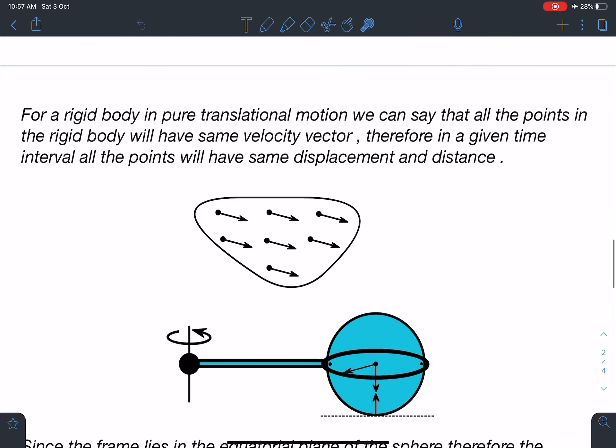For a rigid body in pure translation we can say that all the points in the rigid body will have same velocity vector.